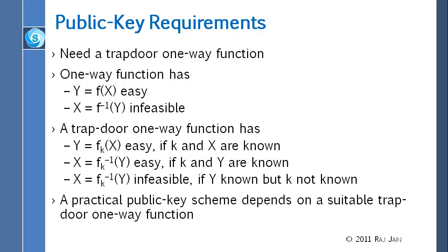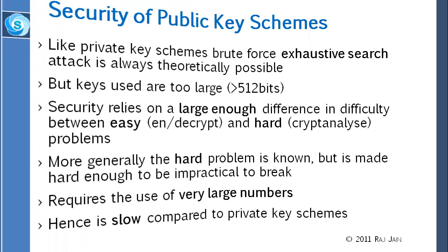Diffie-Hellman said we need to find a function f such that calculating f(x) is easy but inverting it is hard — it's a one-way function, like a hash function. But at the same time it must have a trapdoor property: if you know the key, you can invert it easily; if you don't know the key, you can't invert it. People were thinking about how to find these trapdoor functions, and it took some time before RSA came up with the first method to do this.